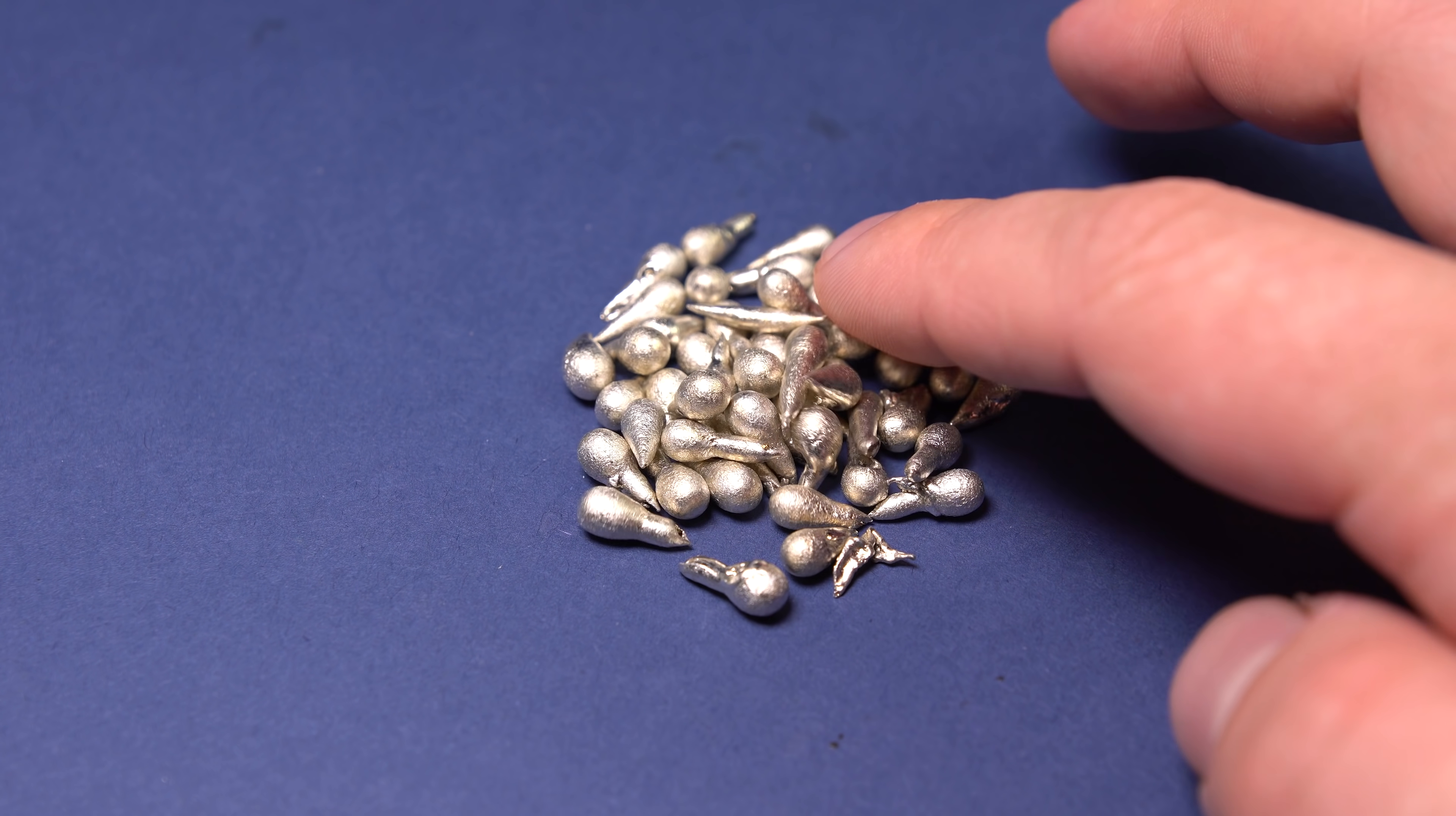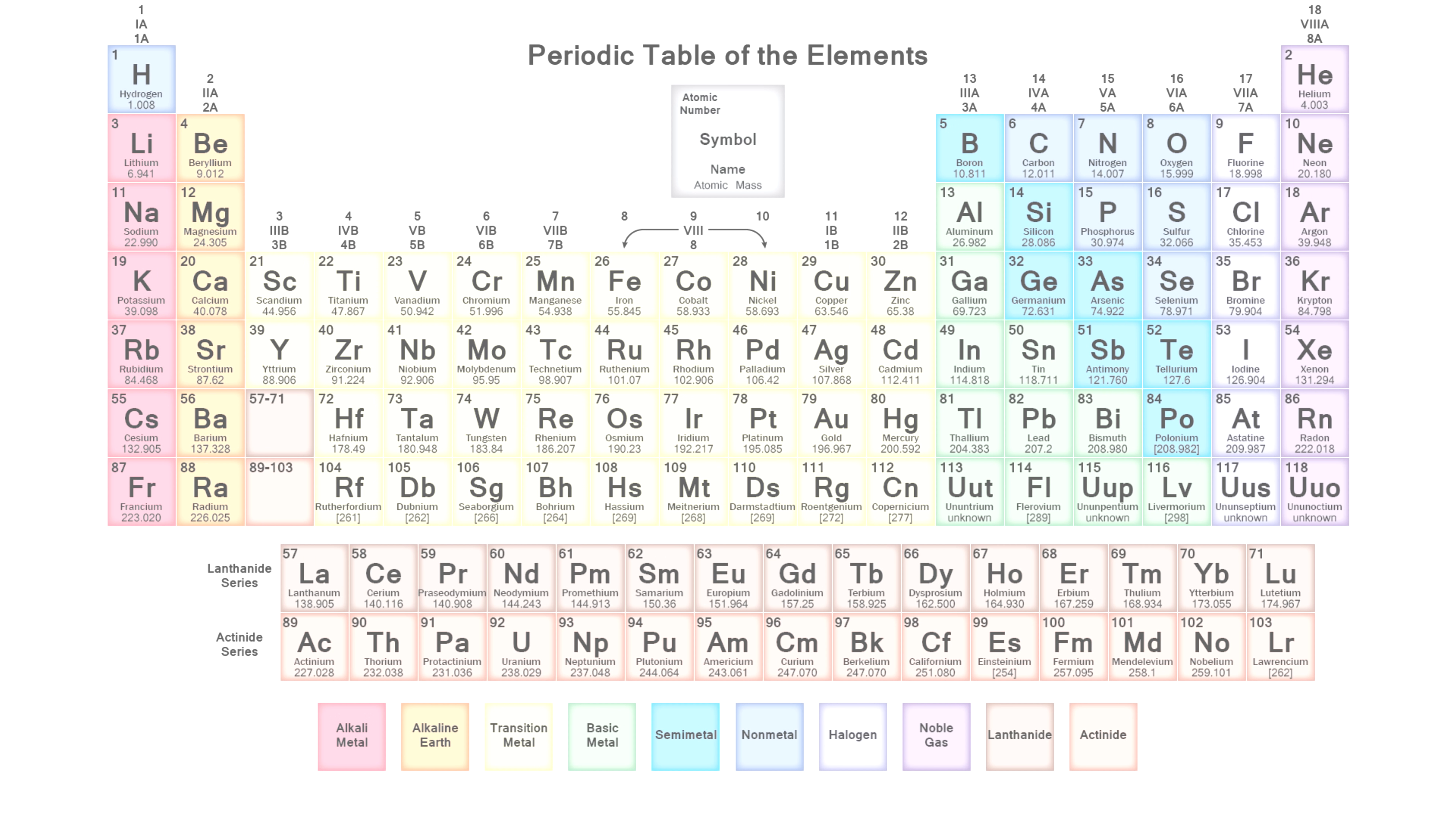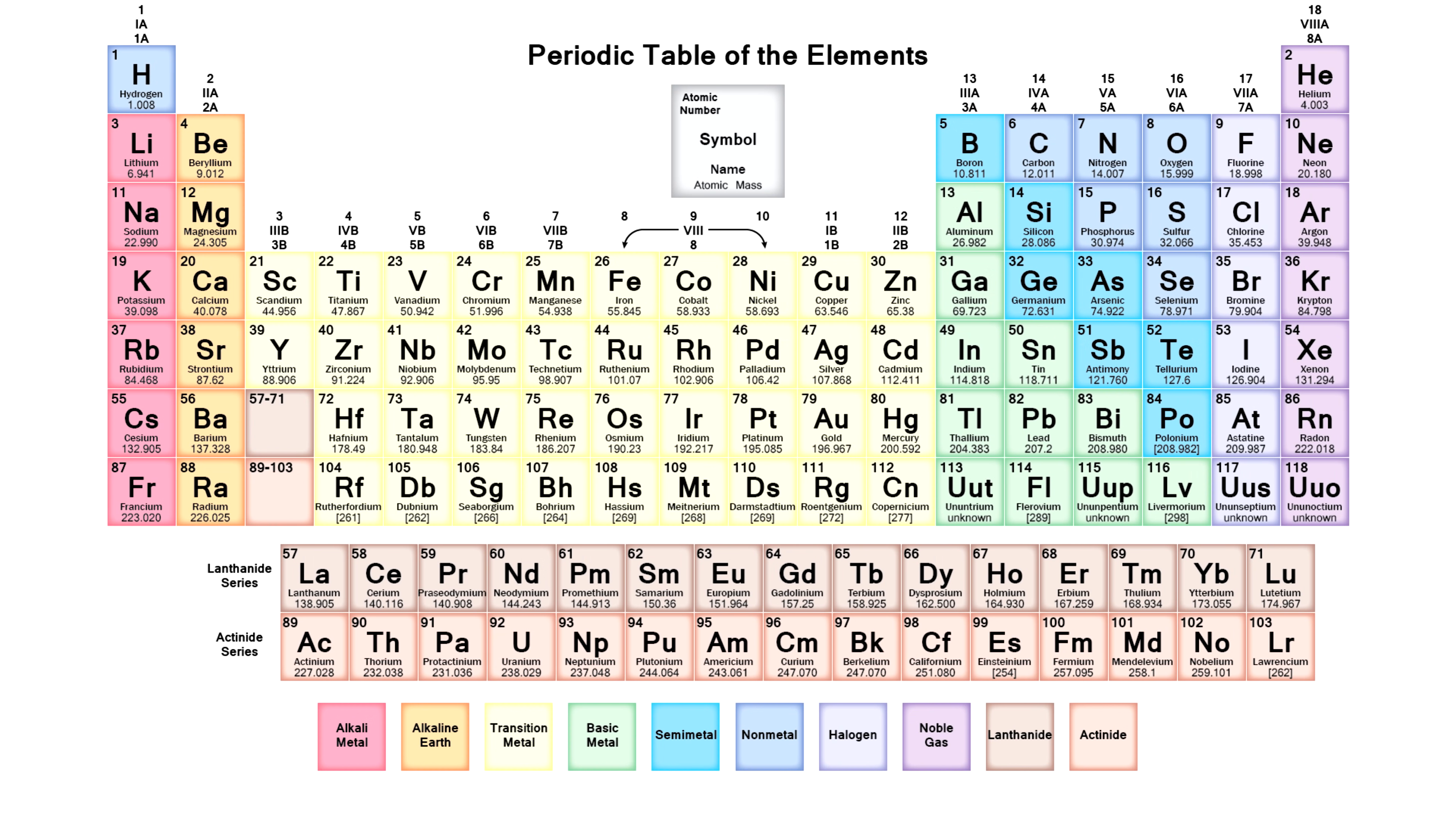Hello everyone! Today I want to tell you about such a metal as tin. In the periodic table of chemical elements, tin is in the 14th group among the so-called base metals.